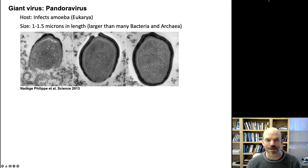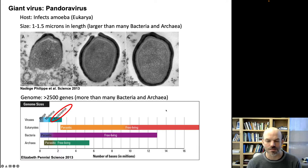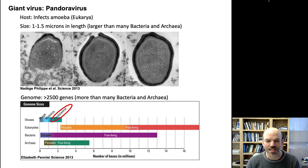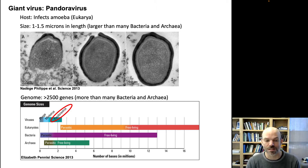Diversity in size as well. The Pandora virus can be up to one and a half microns in length — that's larger than a lot of bacterial and archaeal cells. It's like a proper cell-sized particle, so large that for a long time it was not even recognized as a virus. Even now it has been proposed as a potential missing link between viruses and cells, and it certainly has features of both cells and viruses, which makes it really intriguing.